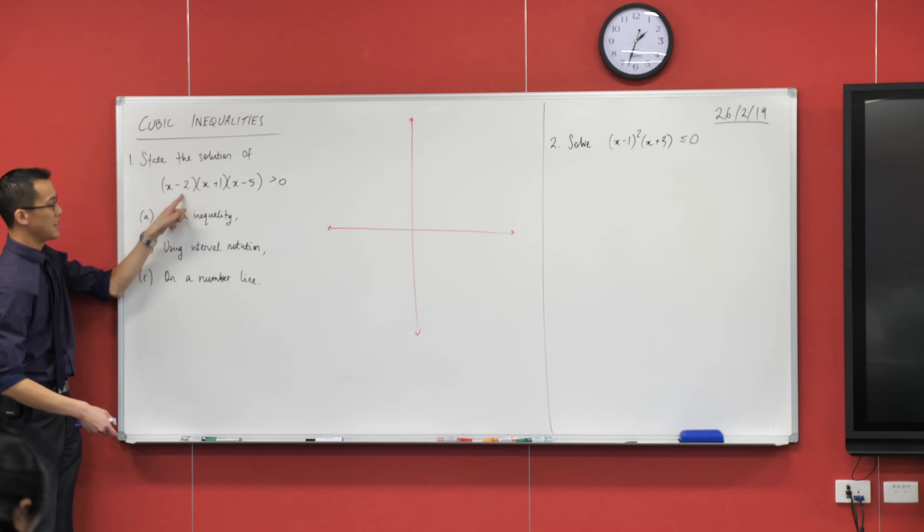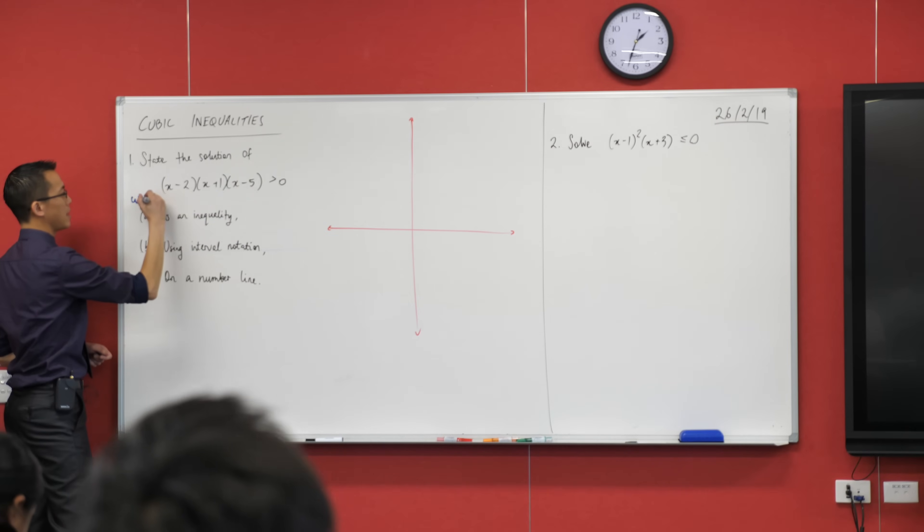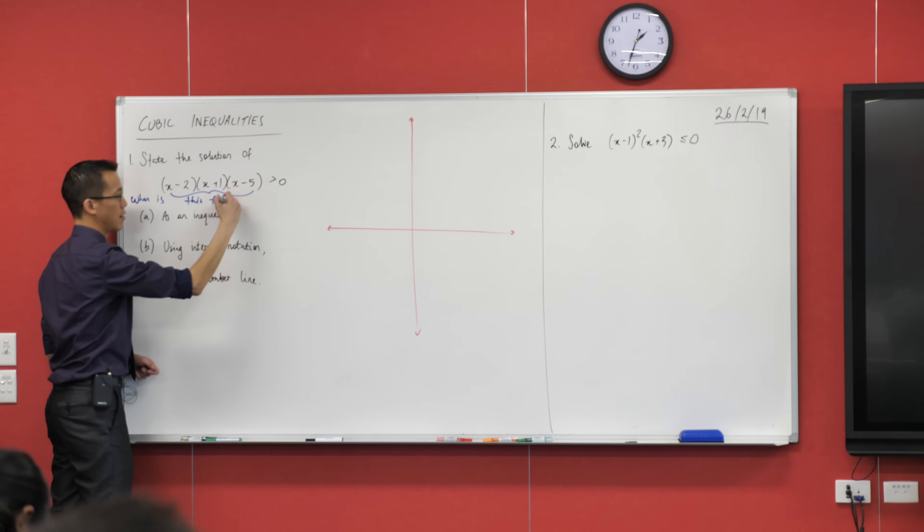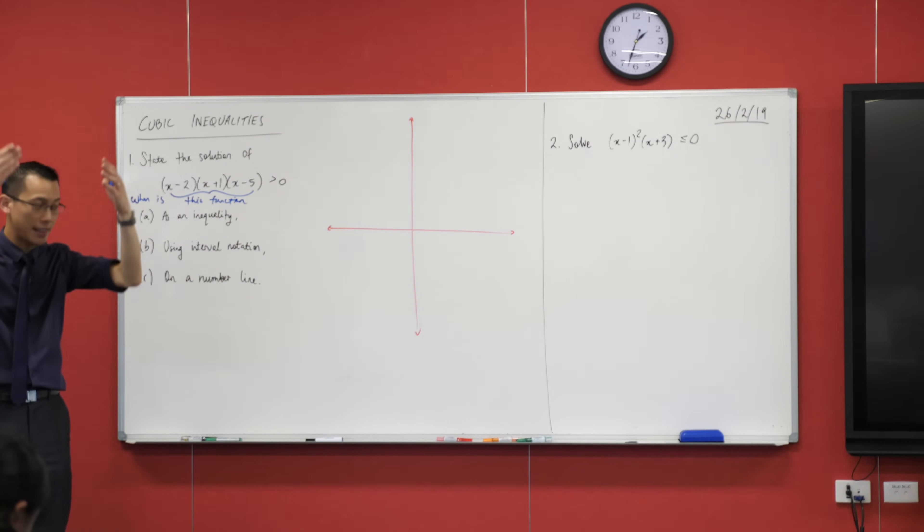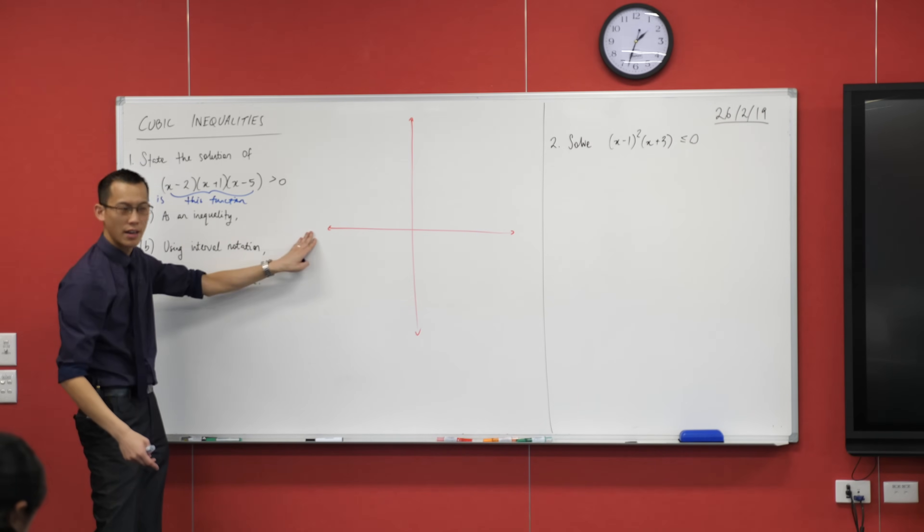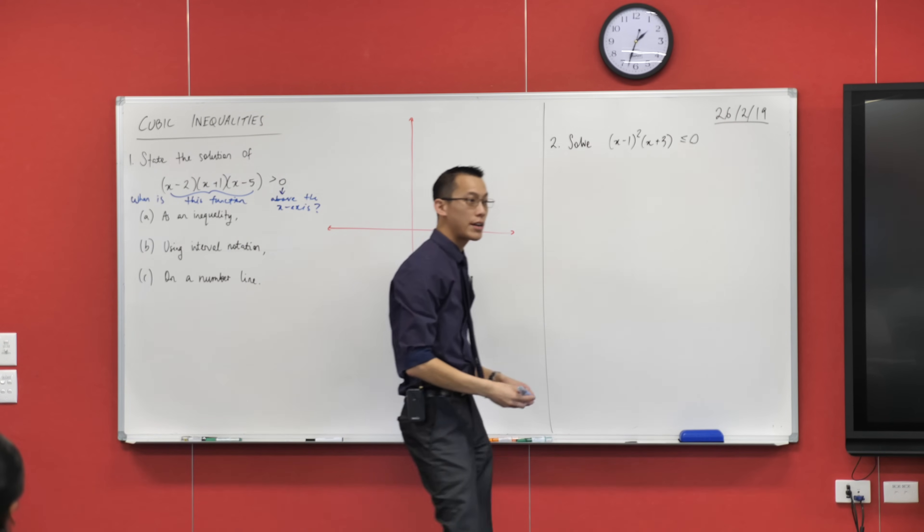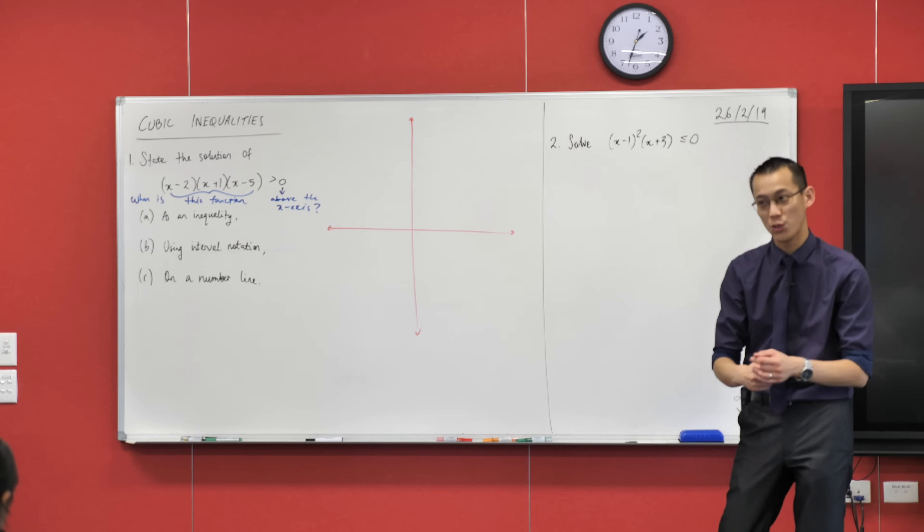So when I see this thing greater than zero, what I read is when is this function greater than zero, so I mean above, greater than this x-axis here. So when is this function above the x-axis. That's the way I read that. I look at those symbols and I think, oh, there's a picture hiding behind this that I can use to help solve this.